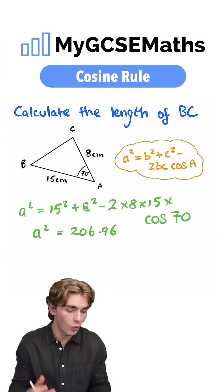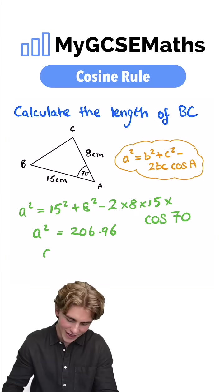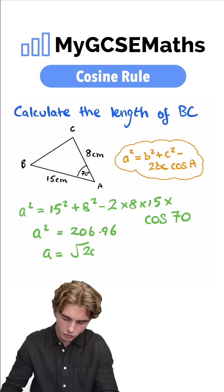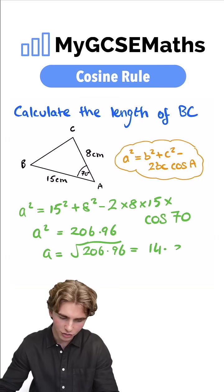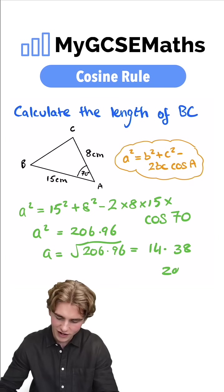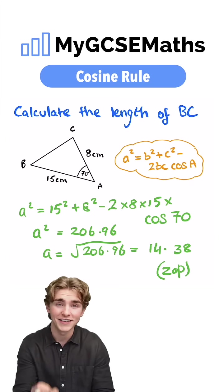Now to find the value of a we can square root both sides. We're going to get a equals the square root of 206.96 which if we plug the gain into our calculator would give us 14.38 to two decimal places. That guys is going to be our answer.